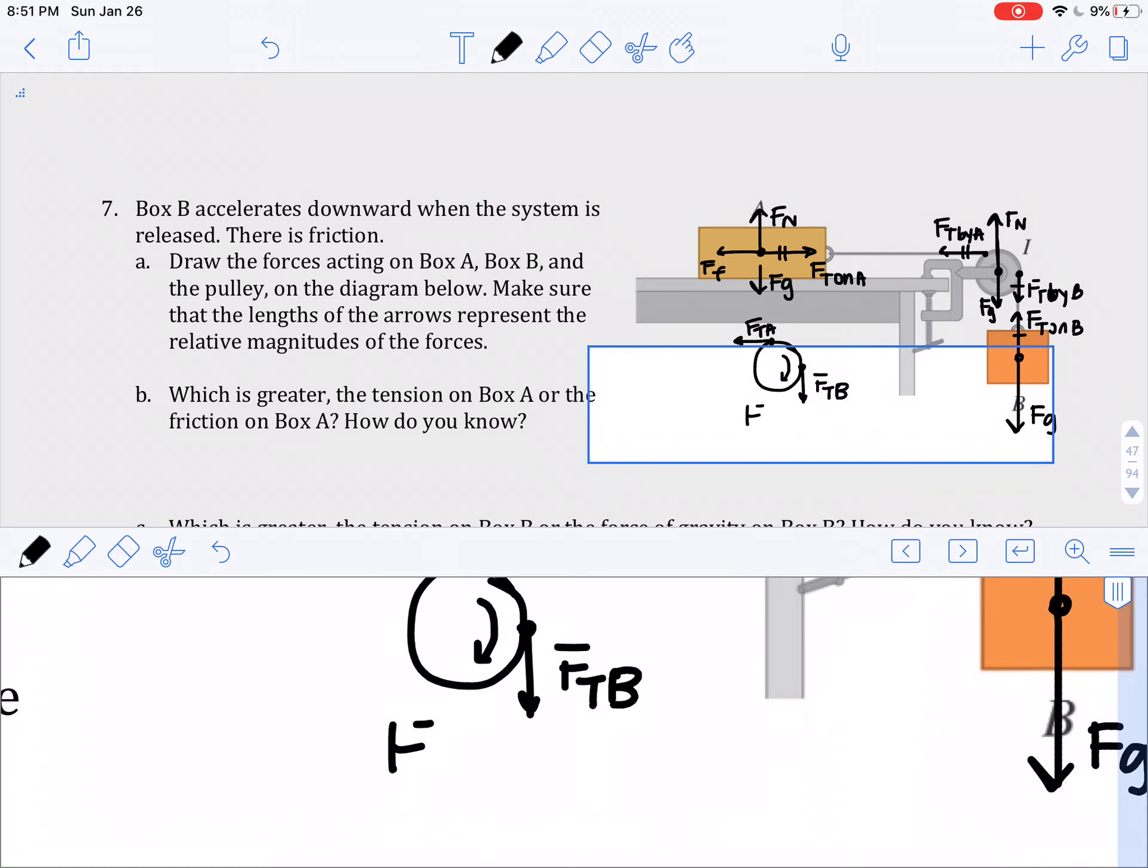So therefore, the force of tension B must be bigger than the force of tension A. So the force of tension that's going down on the pulley should be a lot bigger than the force of tension that's pulling sideways on the pulley.